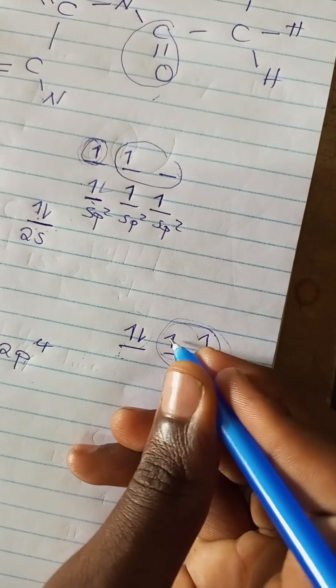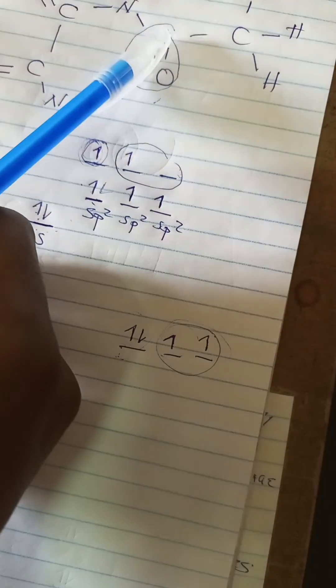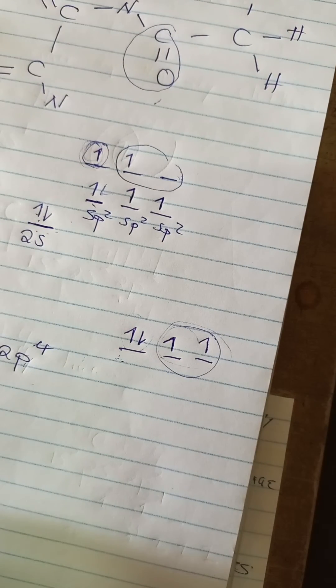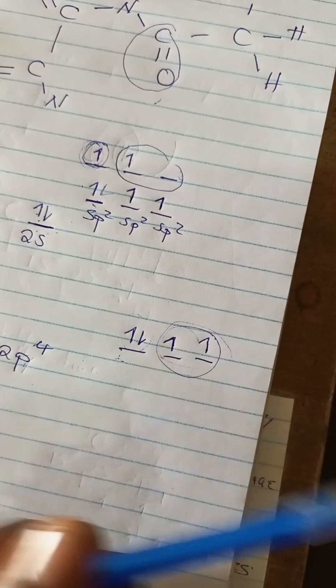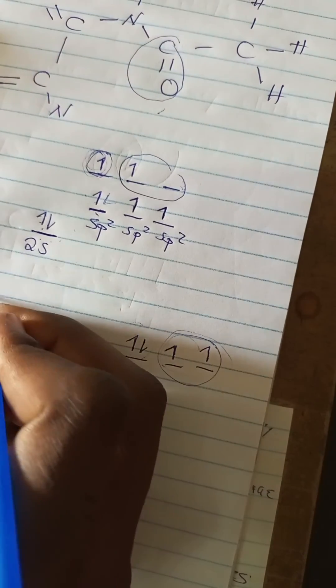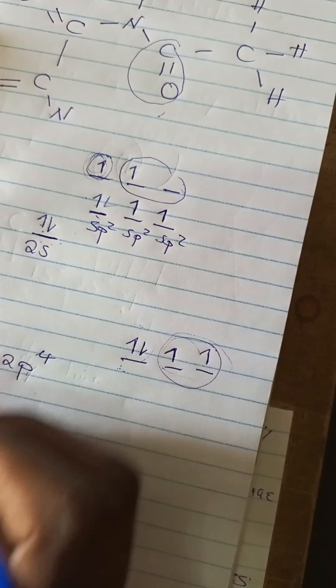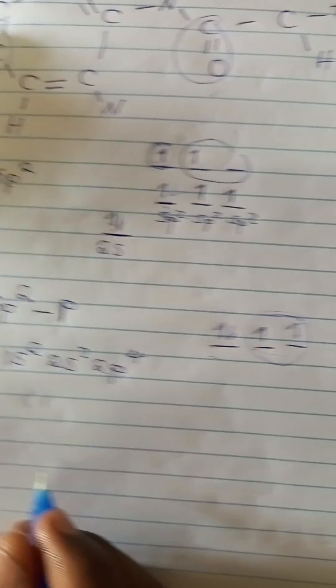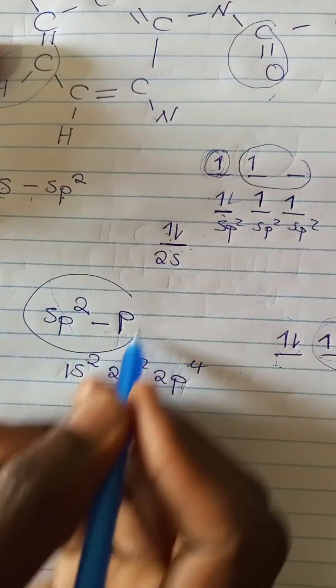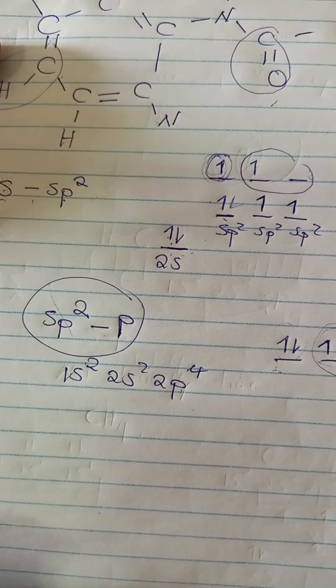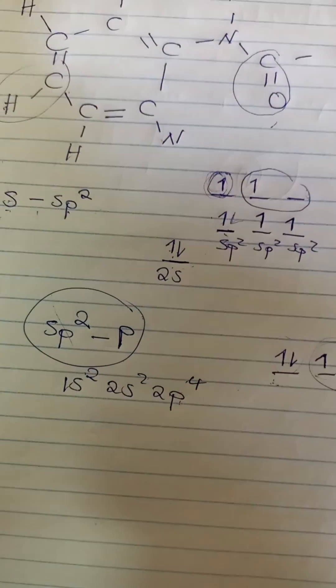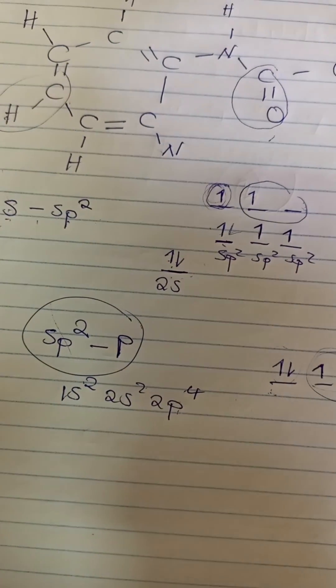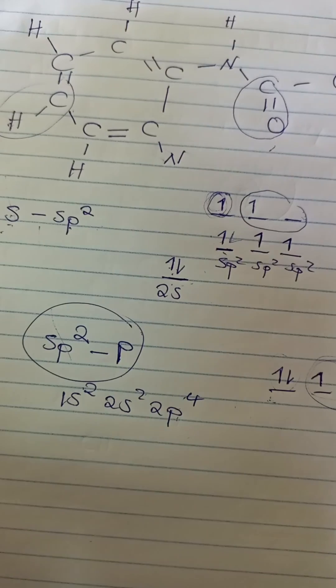Okay, so now it's a p orbital that's taking part in the hybridization. So therefore, sp² to p kind of orbital overlap - that's what you can say about that. So that's what it's actually focused on. Orbital overlaps - look at the orbitals that are taking part in the bond formation.